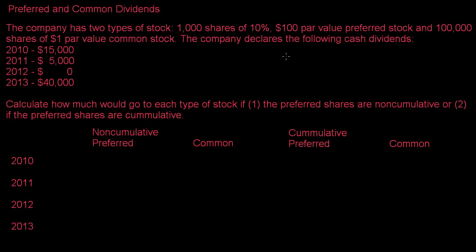So what does cumulative versus non-cumulative mean? In non-cumulative stock — and this only applies to preferred shares — if the dividend does not get paid, or if enough dividend is not paid, then the preferred shareholders go without their full dividend. It does not accumulate in arrears.